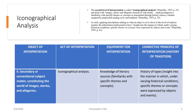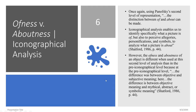When describing an object at this level — ofness and aboutness again — remember that museum objects with text versus without text adds another layer of interpretation. At the iconographical level, we can specify what a picture is of, but also perceive allegories, personifications, and symbols. For example, a person studying Egyptian text can get at what those symbols mean on Egyptian hieroglyphics.